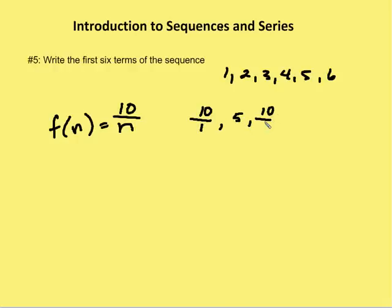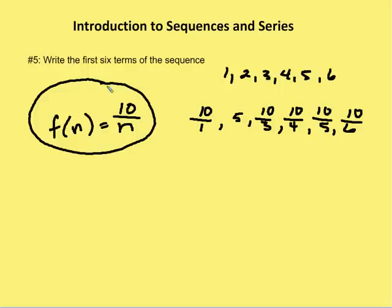10 over three, 10 over four, 10 over five, and then 10 over six. So those are the first six terms of the sequence for this particular function, where I assume that n begins with one and goes to six.